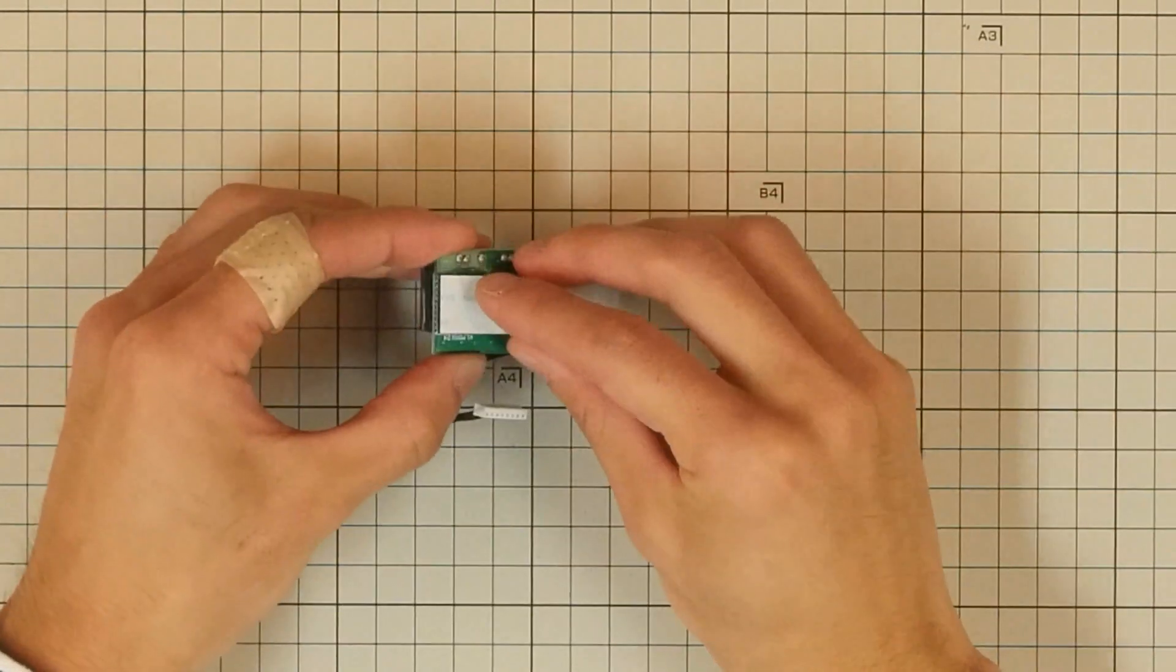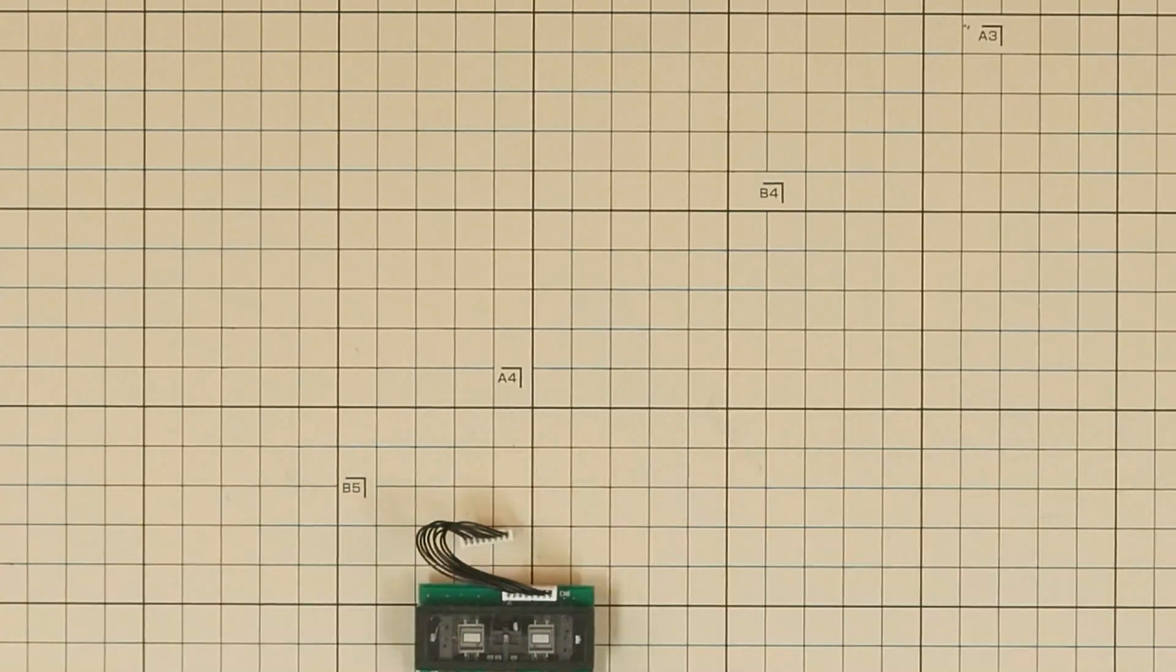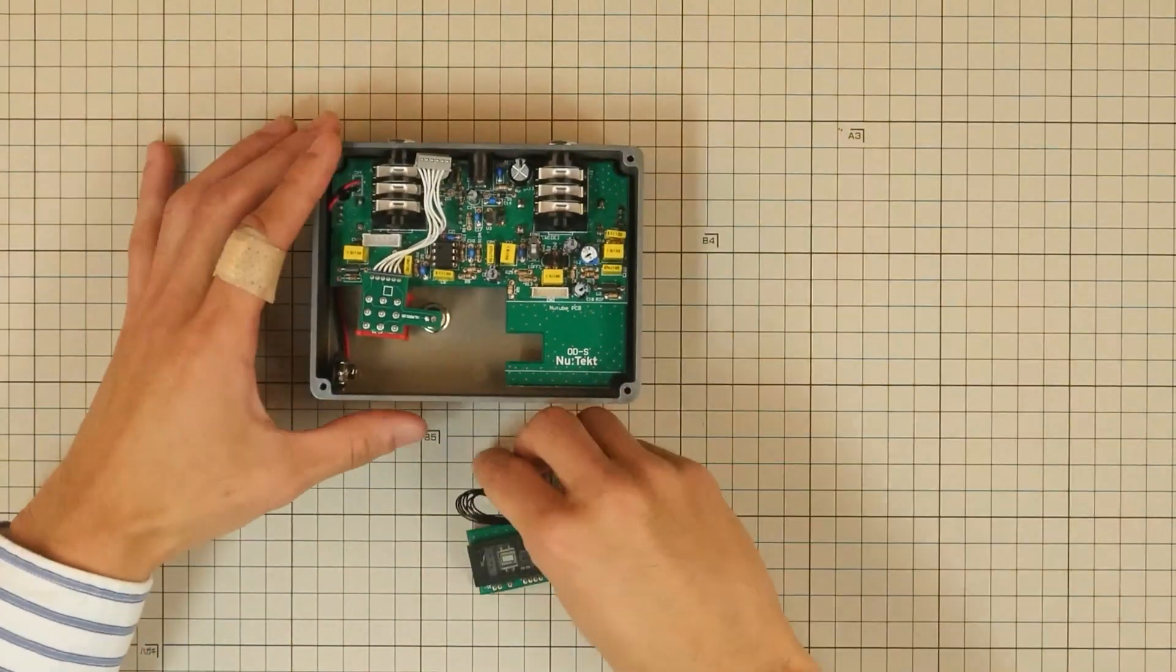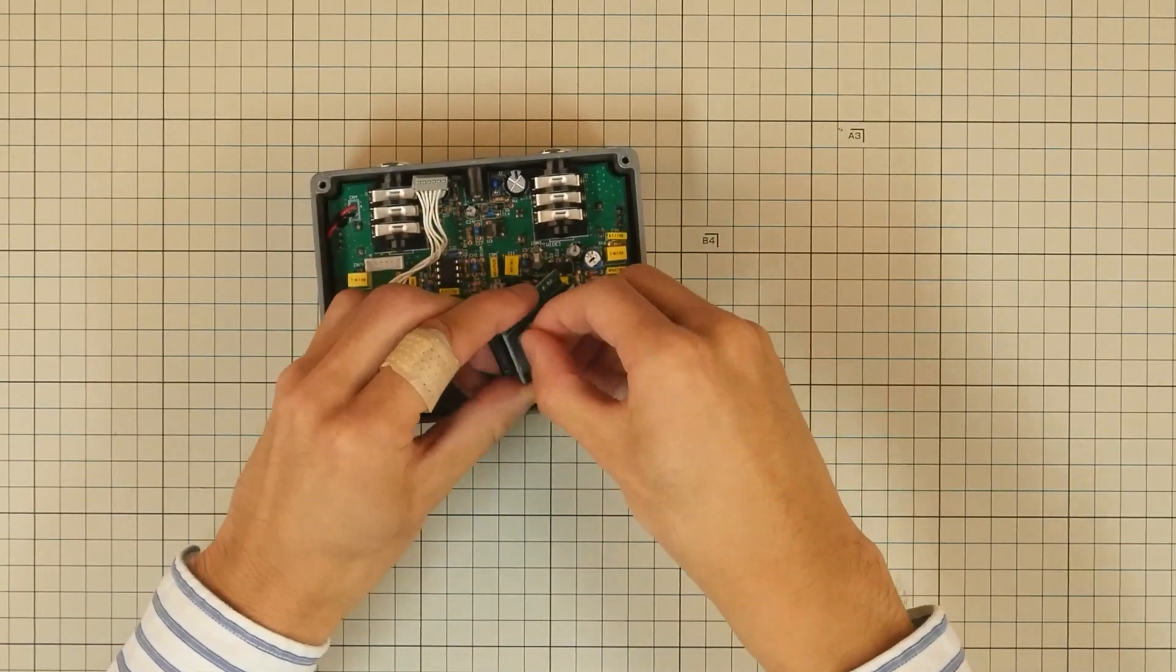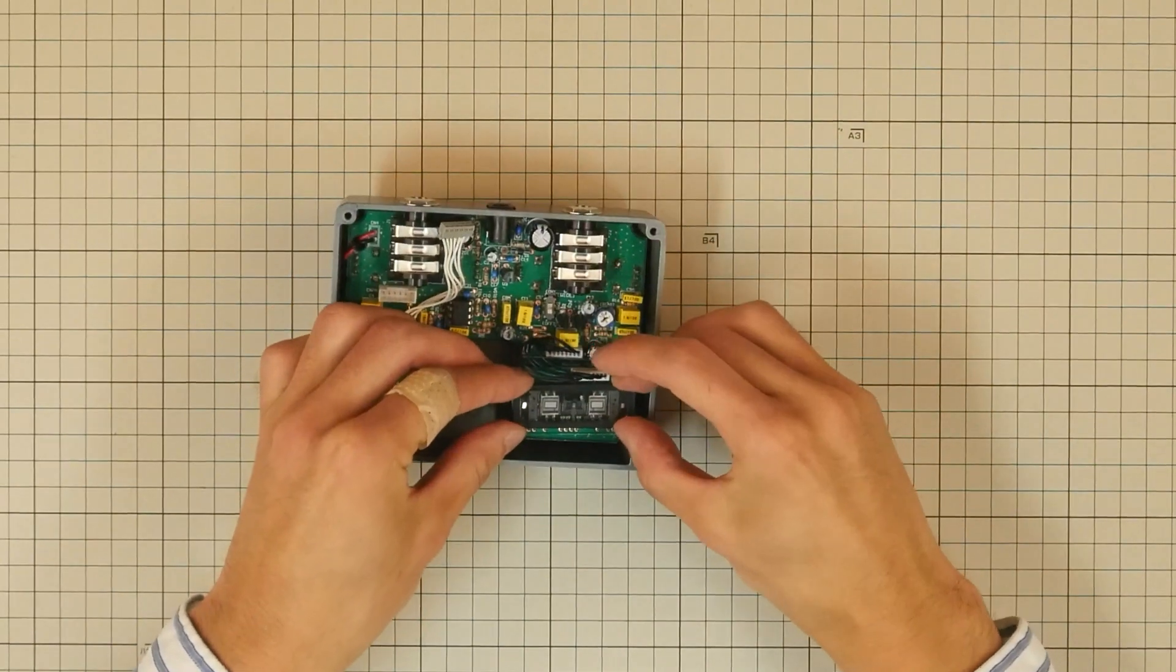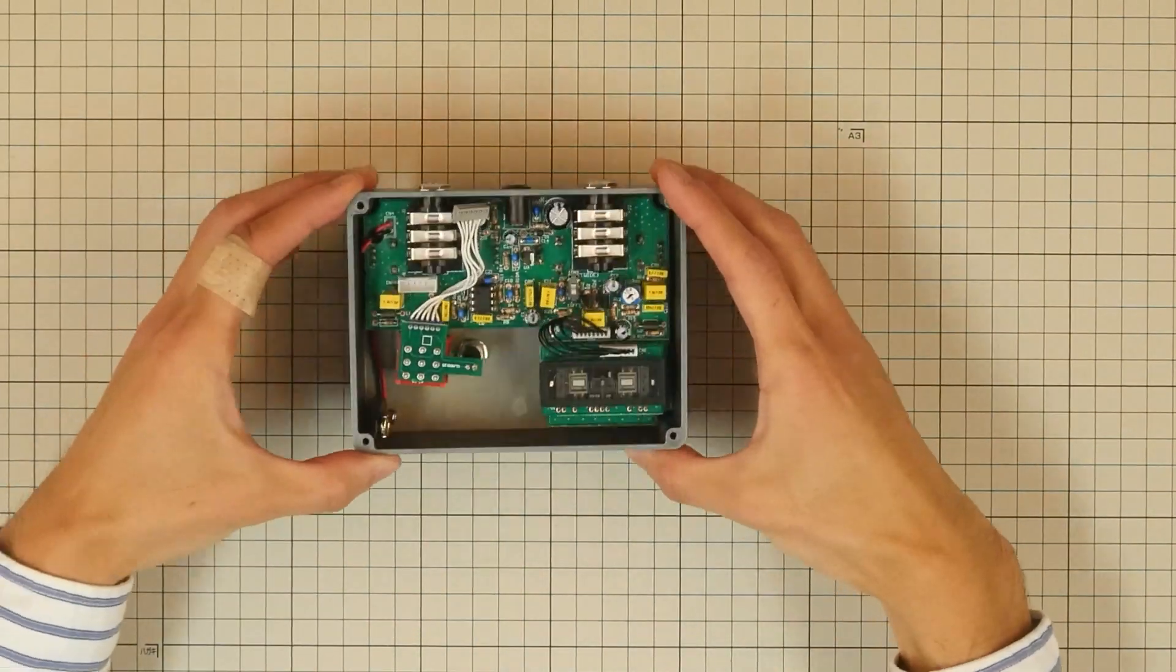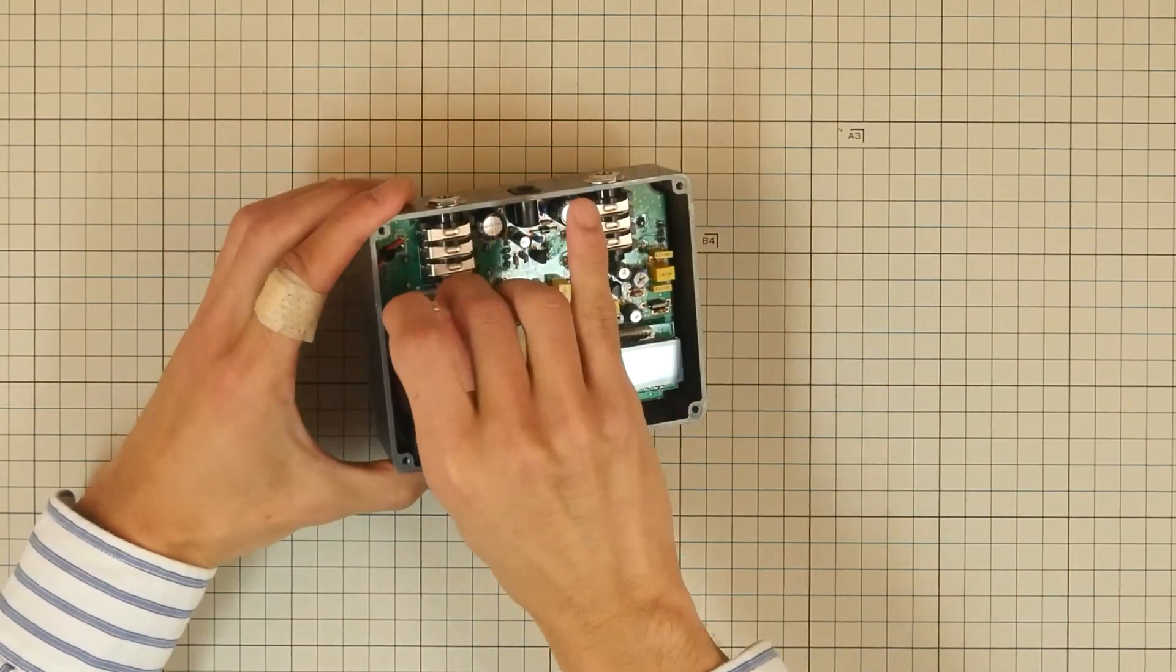Peel off the release paper from one side of the cushion and attach it to the back side of the new tube circuit board. Then connect the new tube circuit board and the main circuit board with a wire harness. Peel off the release paper from the other side of the cushion and attach it to the main circuit board. Next, connect the harness of the foot switch to the main circuit board as well.